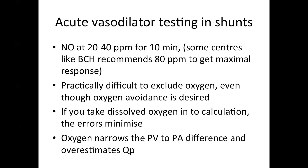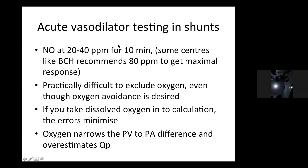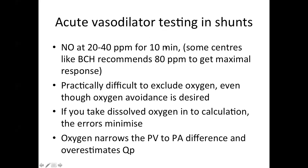Acute vasodilator testing is done in shunts. The commonly used vasodilator is nitric oxide at 20 to 40 parts per million for 10 minutes. No need to administer for too long a period because the effect of nitric oxide is seen within a reasonably short period. Some centers like Boston Children's Hospital will directly recommend 80 parts per million to get the maximum response instantaneously. Practically, it is very difficult to exclude oxygen, and hence in most labs, nitric oxide is combined with oxygen.